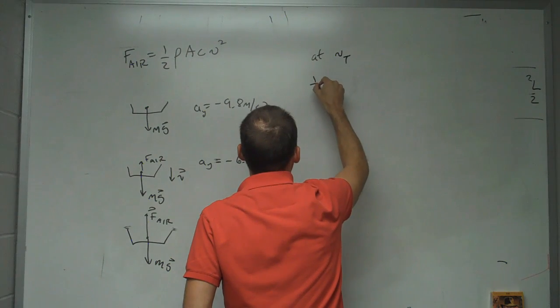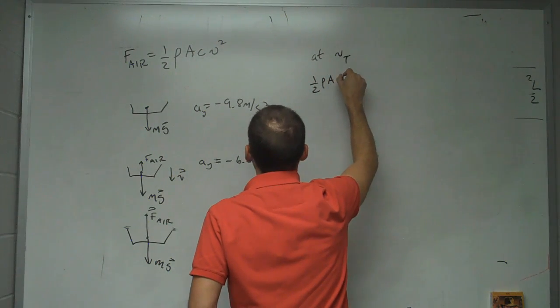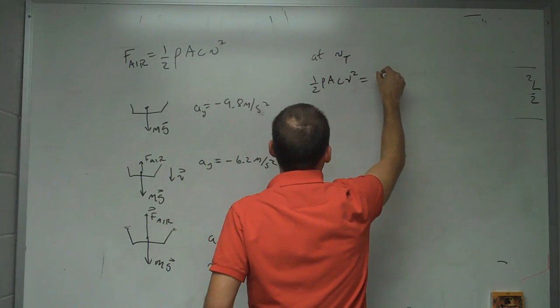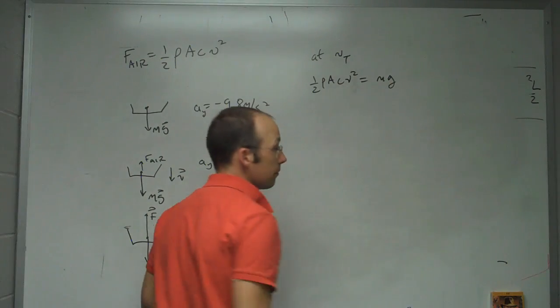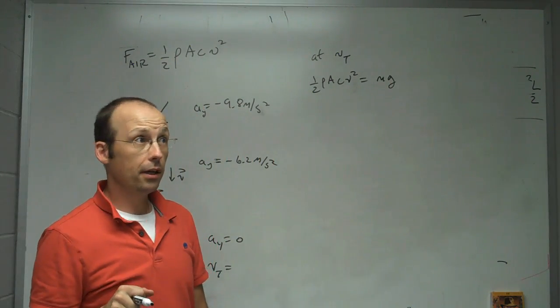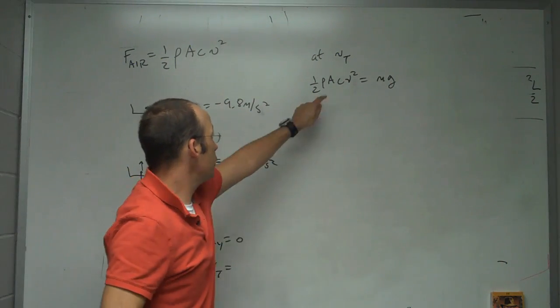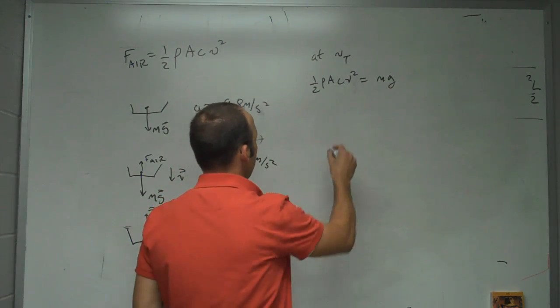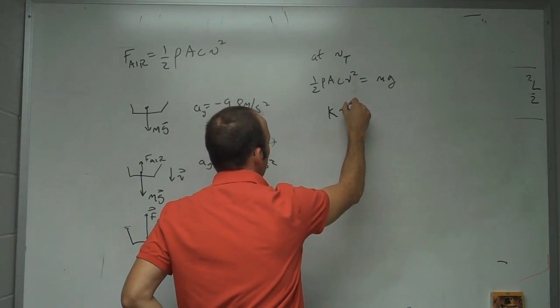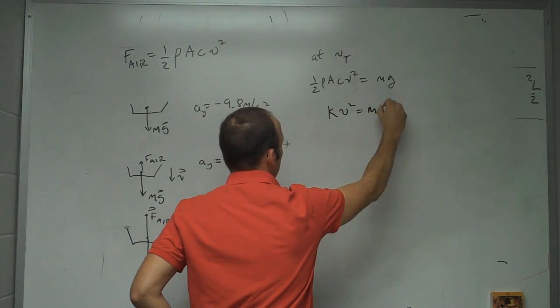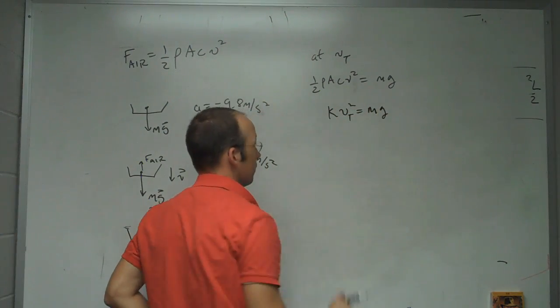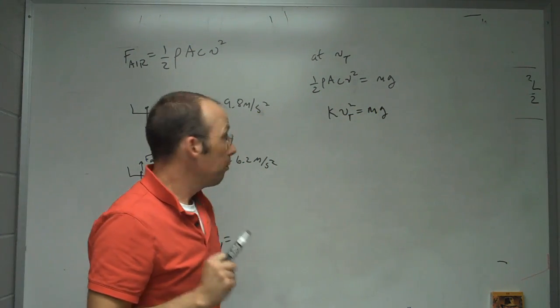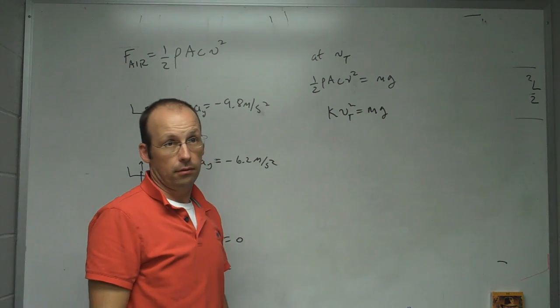So at terminal velocity, then one-half rho a c v squared equals mg. Now in this particular lab we're not changing a, we're not changing c, we're not changing rho. If you want, we can just say this is equal to some constant times v squared equals mg. And that's the terminal velocity, but we want to find that constant. That's what we want to do.